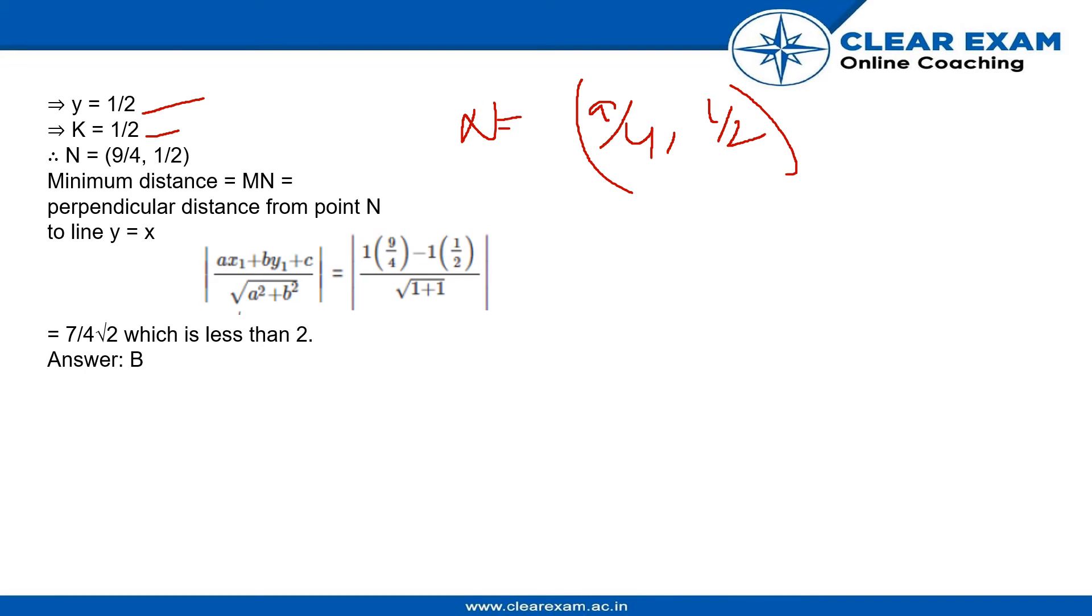So, minimum distance, i.e. mn, perpendicular distance from point n to line y equal to x. For this line, the formula is this. We have to remember the formula, which is perpendicular distance from a point to a line, y equal to x.